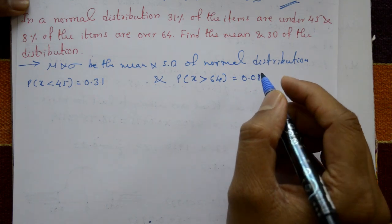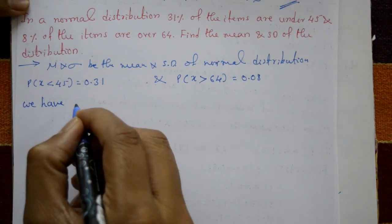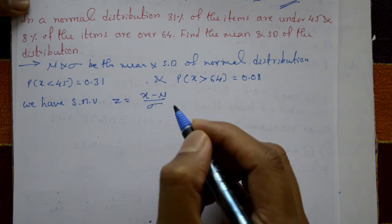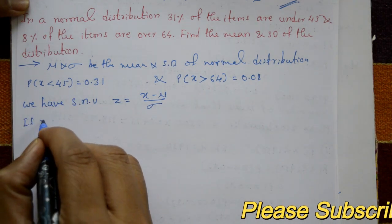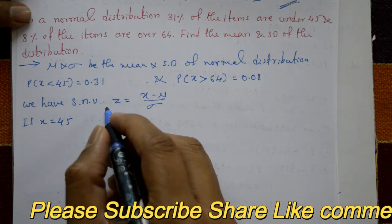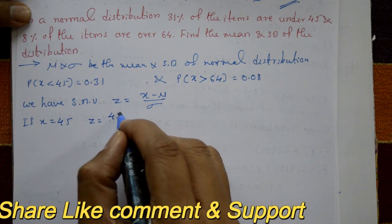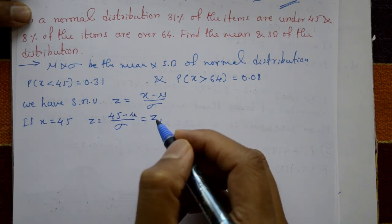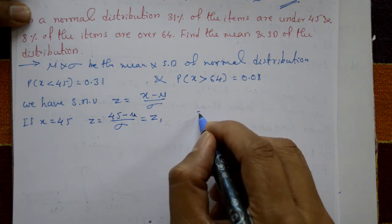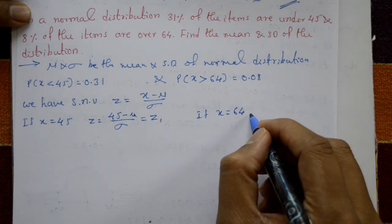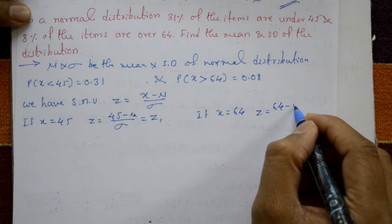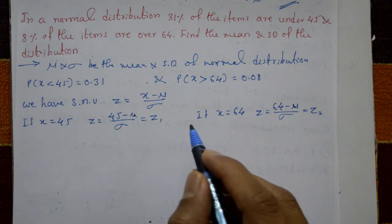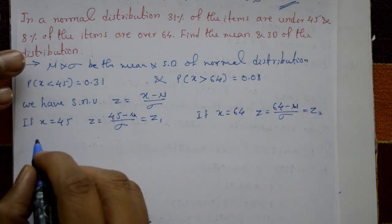We have the standard normal variate Z equal to X minus mu divided by sigma. If X equals 45, then Z equals (45 minus mu) divided by sigma, and that is called Z1. If X equals 64, then Z equals (64 minus mu) divided by sigma, and that is called Z2.